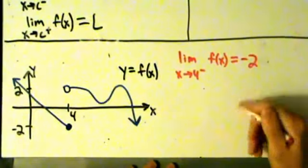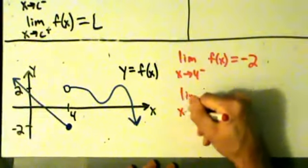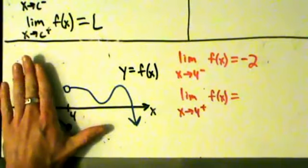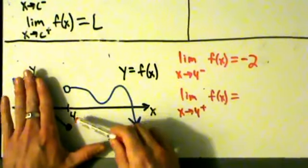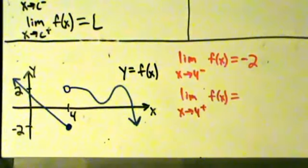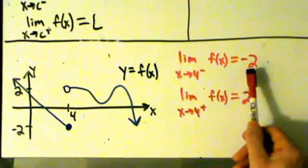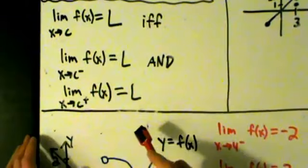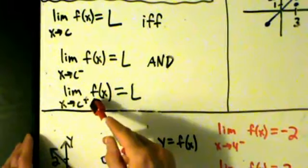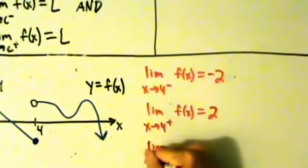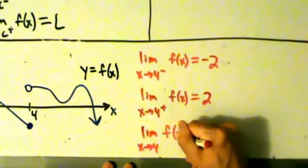It looks like y is going to negative 2. So the left-hand limit as x approaches 4 from the left of f of x equals negative 2. Now for the right-hand limit, the limit as x approaches 4 from the right of f of x — we're going to cover everything up on the left side of 4, and coming in from the right, it looks like the y values are going to 2. So the right-hand limit equals 2. The left-hand limit exists and equals negative 2, and the right-hand limit also exists but equals 2. So they don't equal the same thing, and because the left and the right-hand limits are not the same, the limit as x approaches 4 of f of x does not exist.